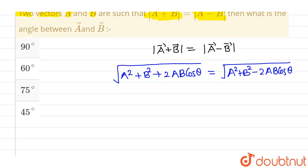Now if I square both sides then I will be getting A square plus B square plus 2AB cos theta, and this will be equal to A square plus B square minus 2AB cos theta.